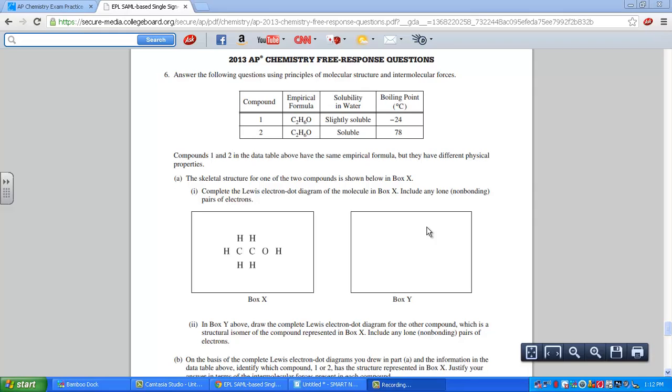The last of our 2013 free response questions, number 6. We're looking at a chart. Compound 1 and 2 are hydrocarbons. They are C2H6O, and we're looking at two possible structures. Compound 1 and compound 2 in the data table share the same empirical formula, but we're noticing they have very different physical properties.